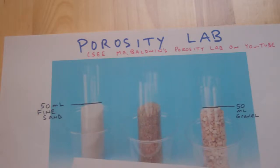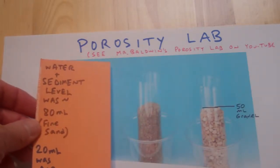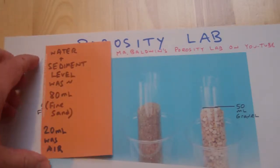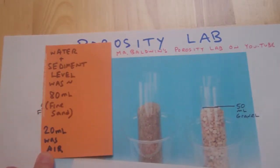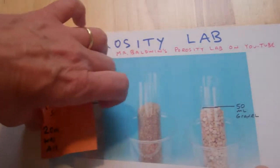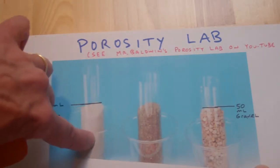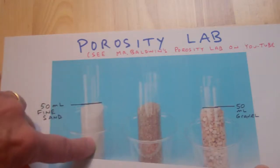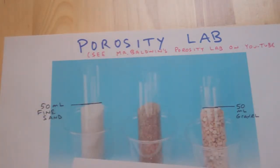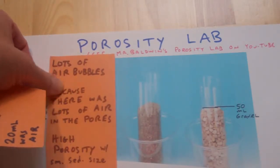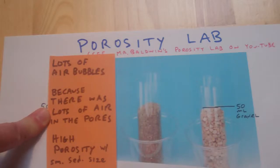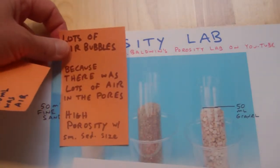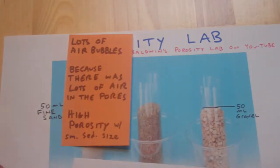When we added water to the fine sand, the water plus sediment level came to about 80 milliliters. That meant that about 20 milliliters had been air space. When we filled the graduated cylinder with water, there was lots of bubbling — the pores were letting their air out and filling with water. So we concluded that the fine sand had a high porosity.